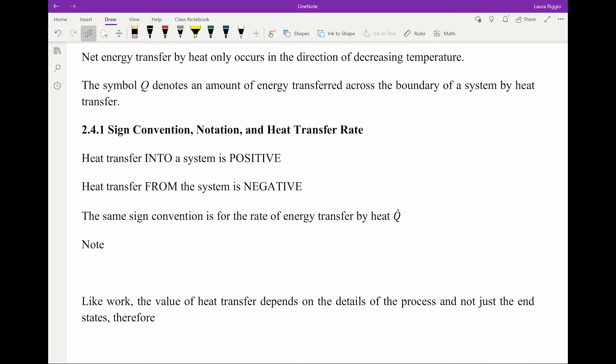The symbol Q denotes the amount of energy transferred across the boundary of a system by heat transfer. So we have our sign convention for heat transfer: heat transfer into the system is positive, and heat transfer from the system is negative, which of course is the exact opposite of the sign convention used for work.